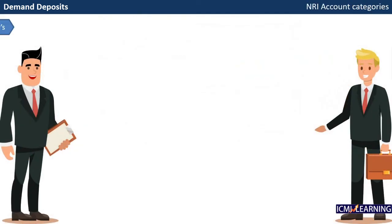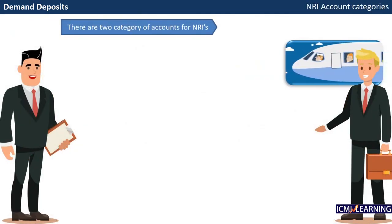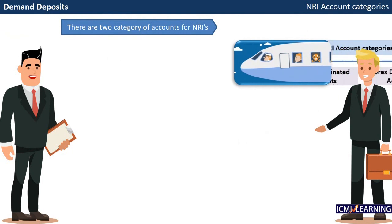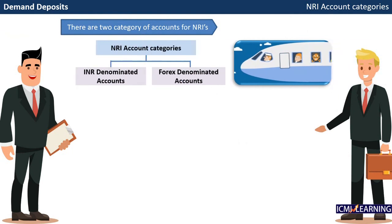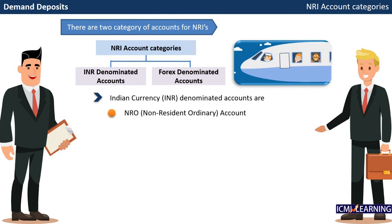There are two categories of accounts for NRIs. Indian Rupee denominated accounts are NRO, that is Non-Resident Ordinary account, and NRE, that is Non-Resident External account.